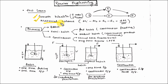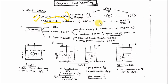Growth kinetics, as I discussed, follows zero order and first order — zero order in the lag phase and first order in the exponential phase. The material balance equation is: mass in minus mass out plus rate of generation minus rate of consumption equals accumulation of mass.